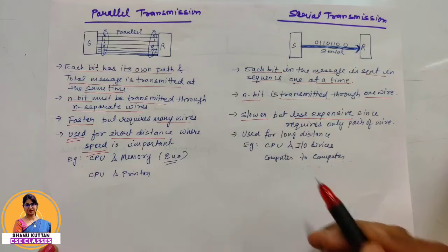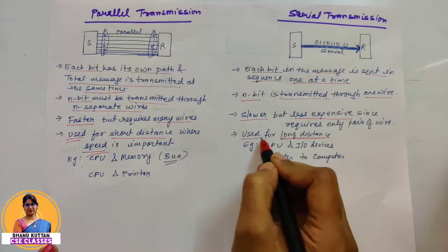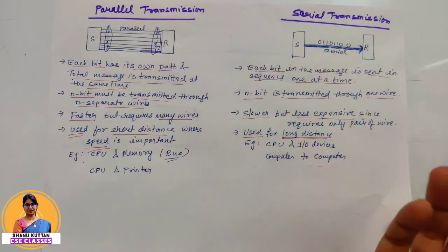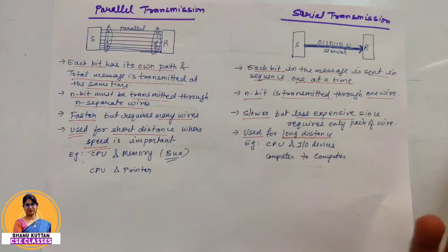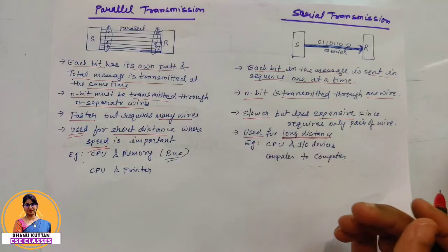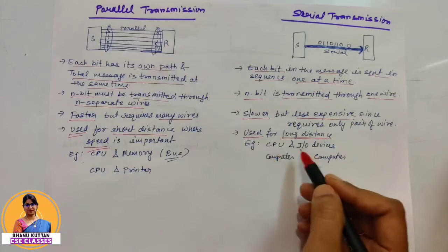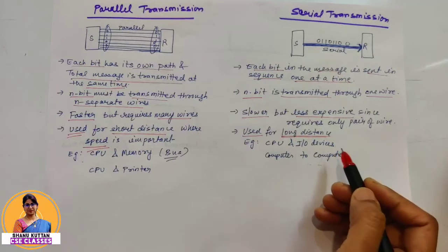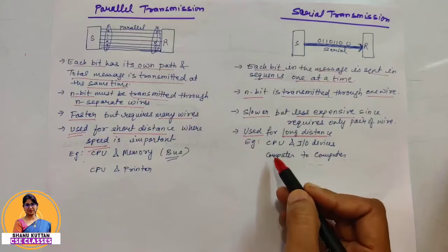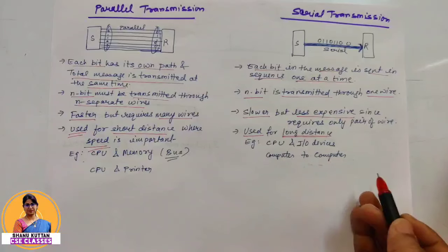In serial transmission, if we need long distance transmission, we use serial transmission. Because over long distances, using multiple wires is not feasible and would be too expensive. So we reduce the cost but compromise on speed — that's why serial transmission is used for long distances. For example, between CPU and input/output devices like a keyboard, serial transmission is used. Also, communication between computers is possible through serial transmission.